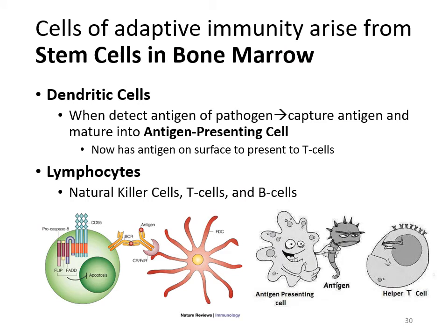This slide shows how adaptive immunity cells arise from stem cells in bone marrow. We see the dendritic cells and lymphocytes, and dendritic cells mature into antigen-presenting cells. Throughout adaptive immunity, you're going to keep hearing antigen-presenting cells — there are three types we'll talk about in a minute. The reason antigen-presenting cells are so important is because adaptive immunity is specific: it has to identify the exact pathogen, and antigen-presenting cells are exactly how that identification happens.